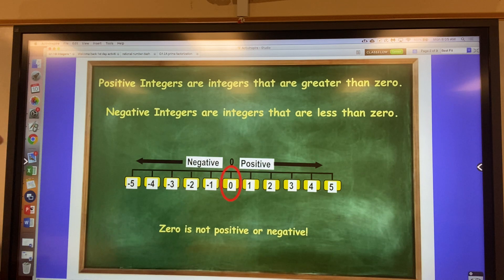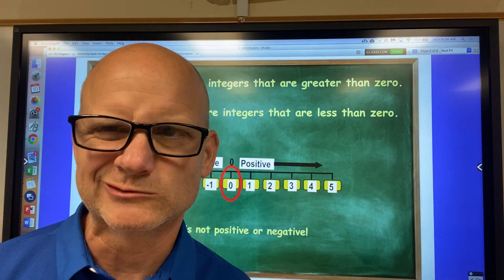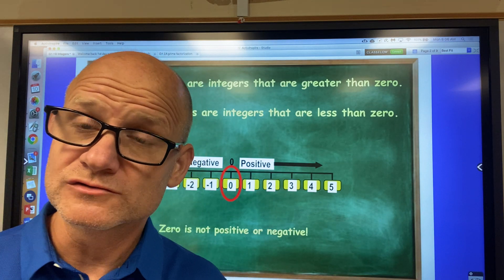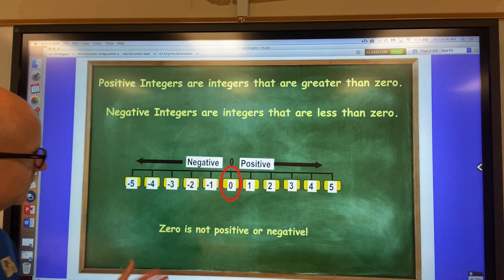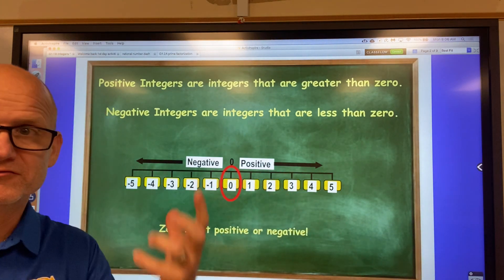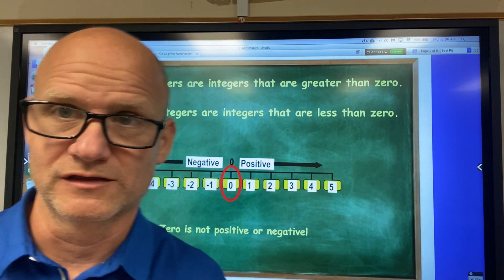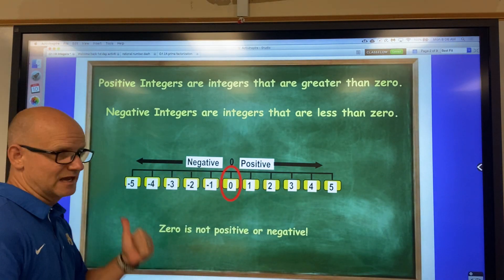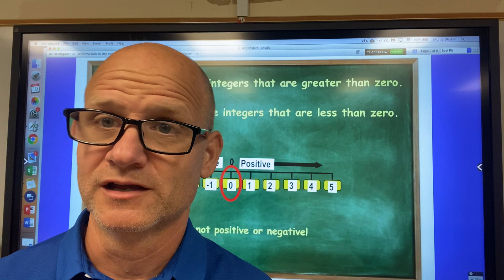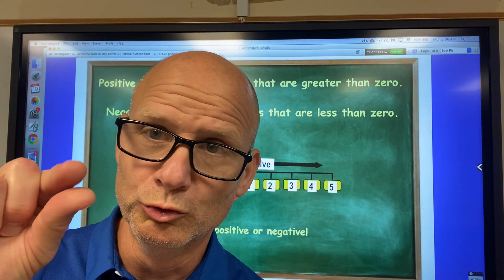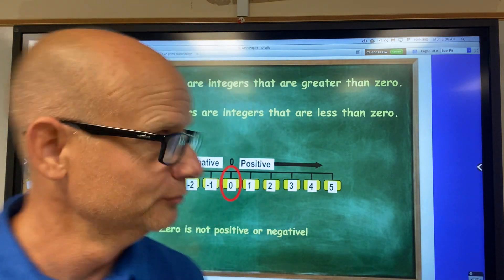So something else that I wrote down was positive integers are integers that are greater than zero. Yeah, okay. And negative integers are integers that are less than zero. So as you notice, as you go this way on the number line, the value is greater than going this way. As you go this way toward your left on that horizontal number line, the value gets smaller, smaller, smaller.